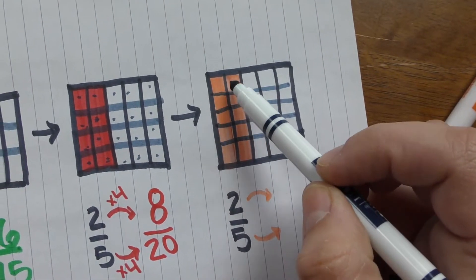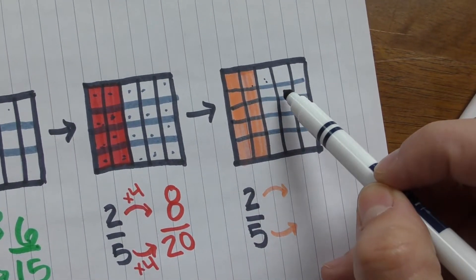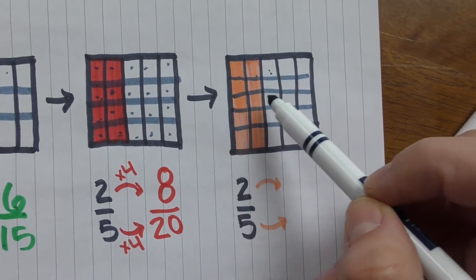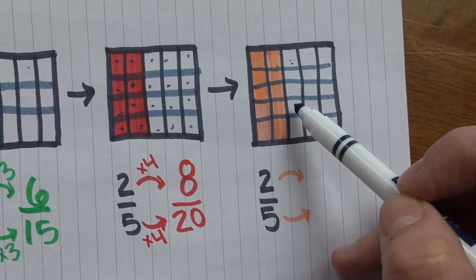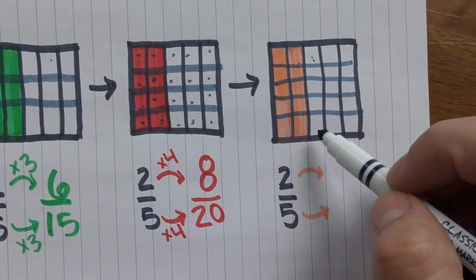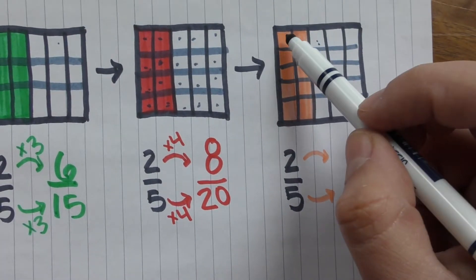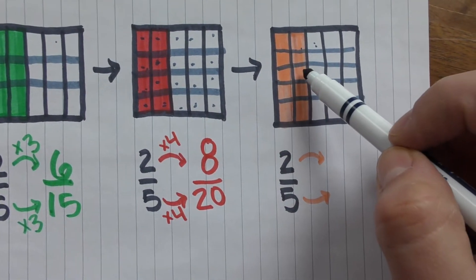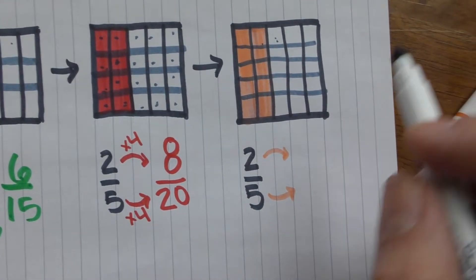So we have twenty-five equal parts and ten pieces shaded.